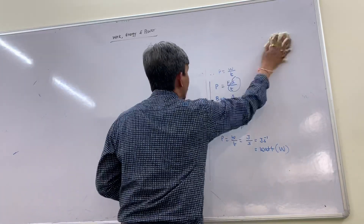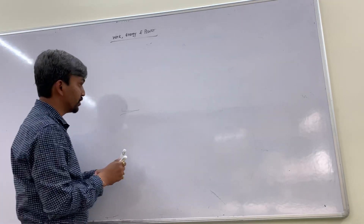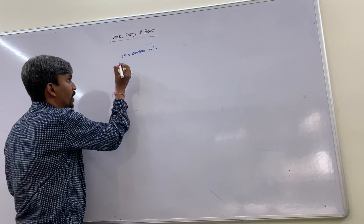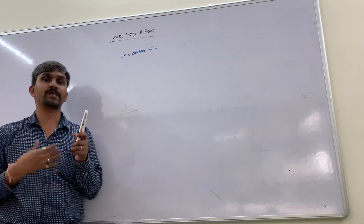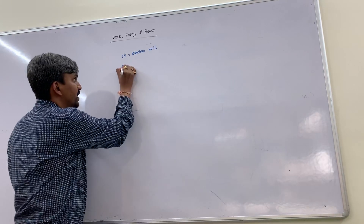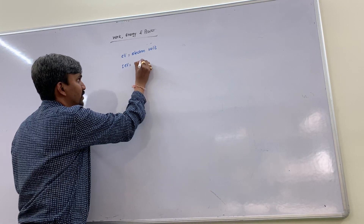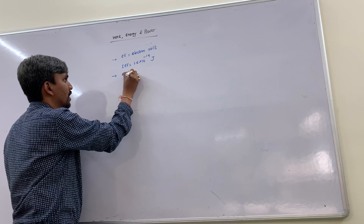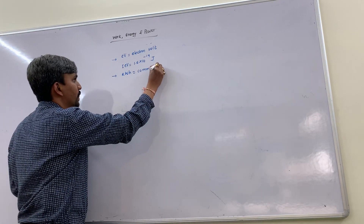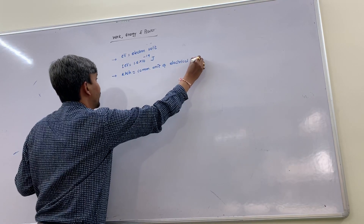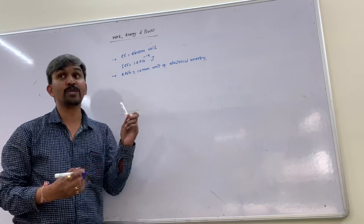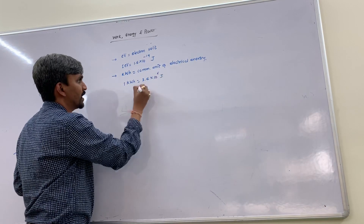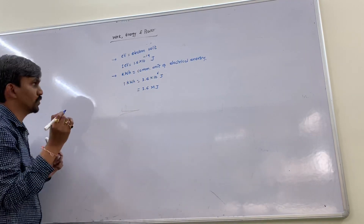Other units of work, energy, and power: The electron volt (eV) is used for the energy of atomic particles. One electron volt is the charge of an electron multiplied by one volt, which equals 1.6 × 10⁻¹⁹ joules. The kilowatt-hour is the commercial unit of electrical energy; one kilowatt-hour equals 3.6 × 10⁶ joules, which is 3.6 megajoules.